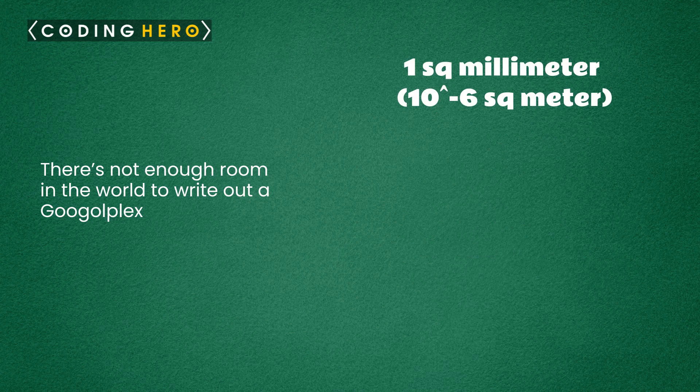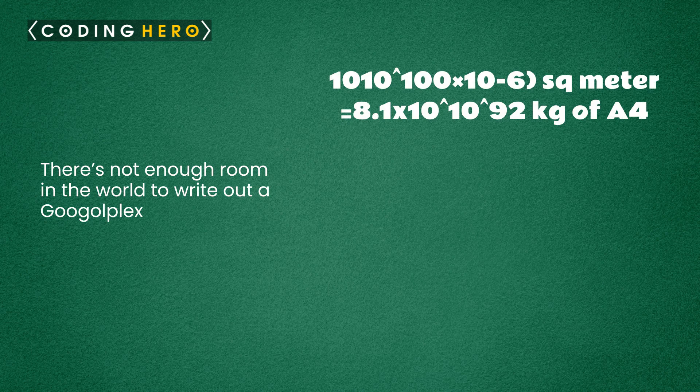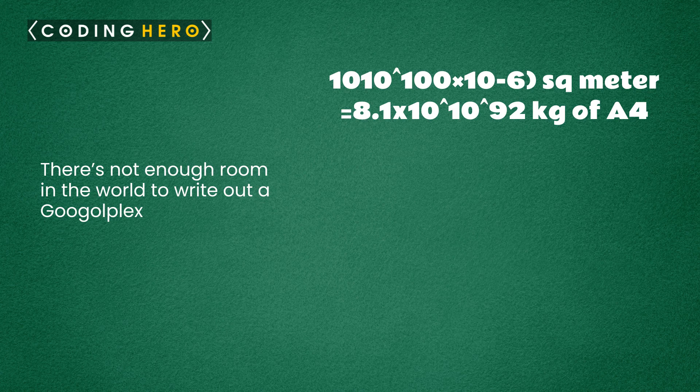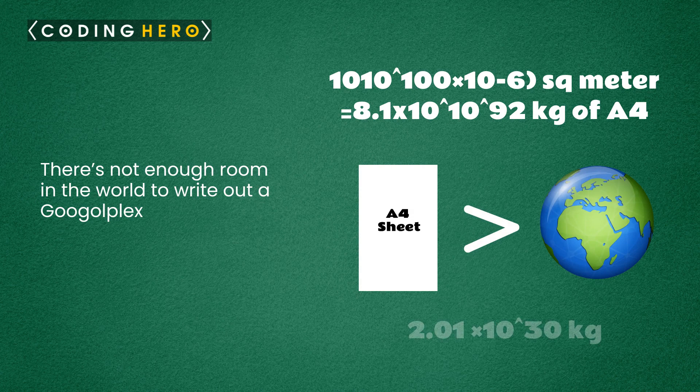Assuming that a single digit needs 1 square millimeter of space, then 10 to the power 10 to the power 100 digits will need 10 to the power 10 to the power 100 times 10 to the power minus 6 square meters of space, which equals 8.1 times 10 to the power 10 to the power 92 kg of A4 sheets, which is far greater than the weight of the whole solar system, which is 2.01 times 10 to the power 30 kg.